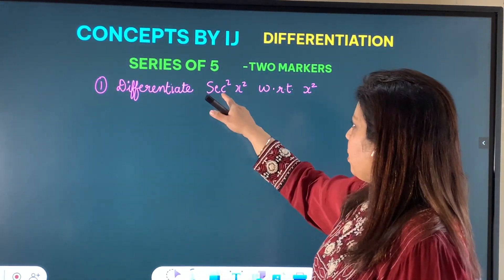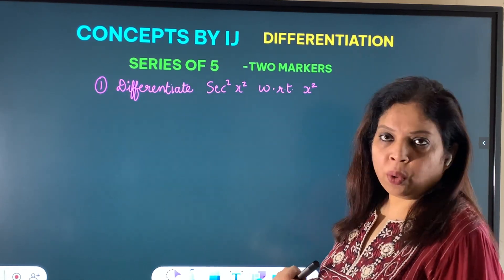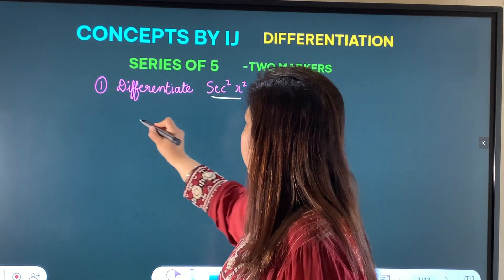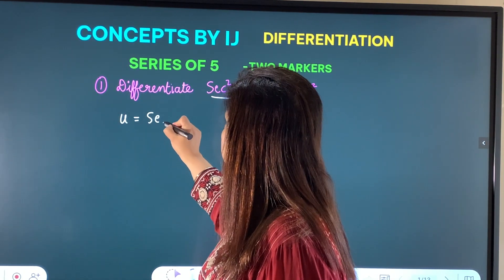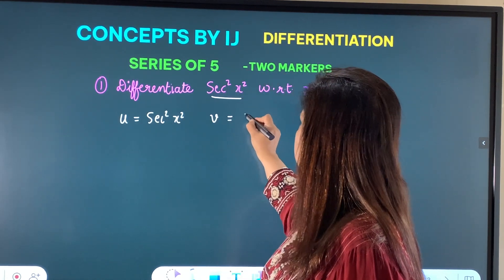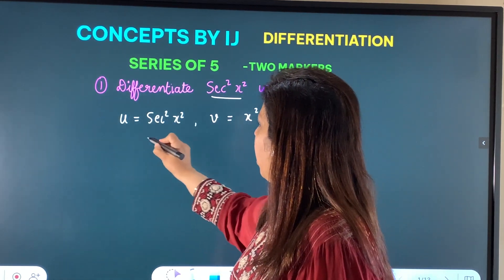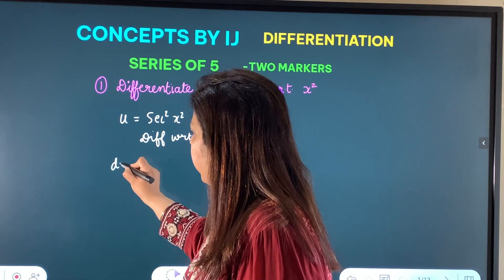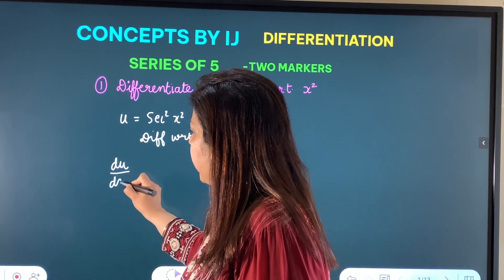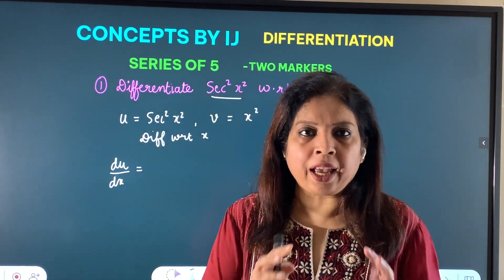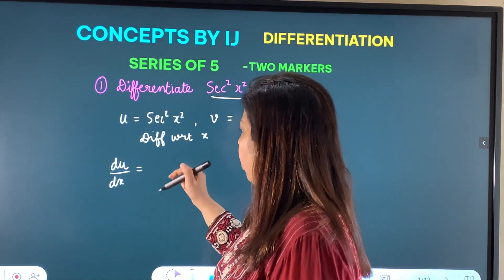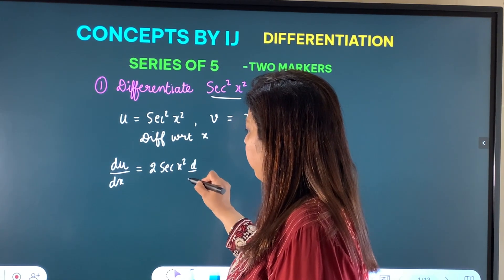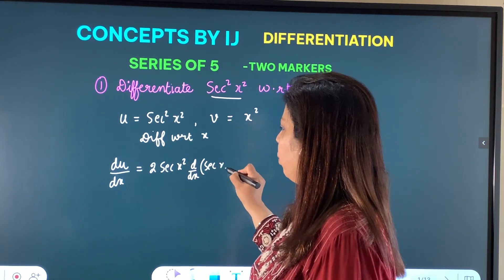First question: differentiate sec²(x²) with respect to x². With respect to x would have been straightforward, but here it is with respect to x². So we take u = sec²(x²) and v = x². Now we differentiate with respect to x. du/dx — since sec² means (sec(x²))², the power 2 comes out front: 2 sec(x²) into derivative of sec(x²) by chain rule.